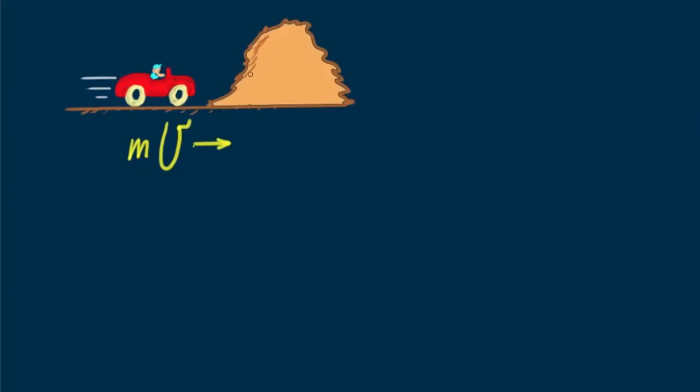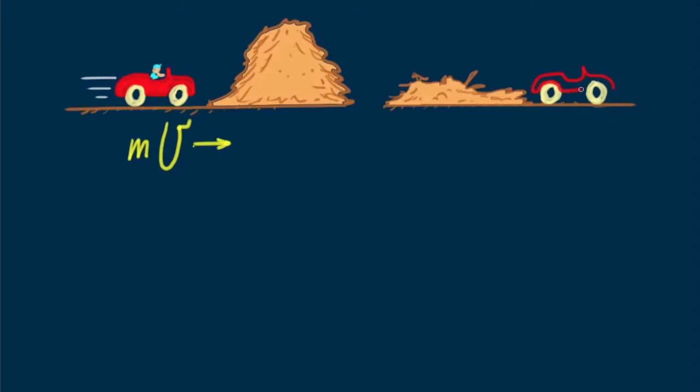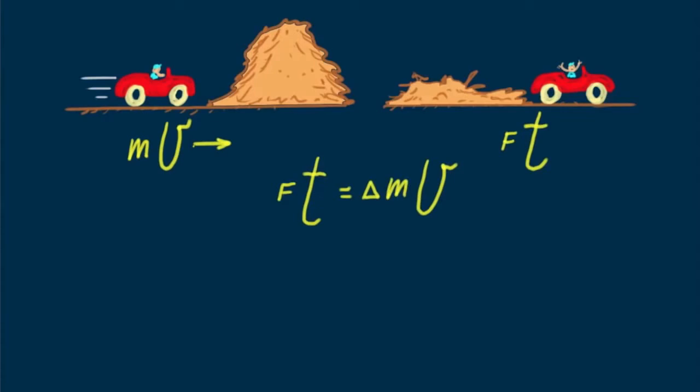We can apply this relationship to the unfortunate situation of being in a car that goes out of control and is brought to a halt by a collision. In any case, the impulse of the collision will bring your momentum to zero. Suppose the collision is with a haystack — the impulse is mostly in time, which is a good thing. A long time means a small force for a given impulse.